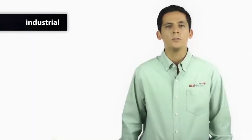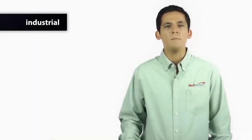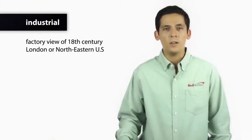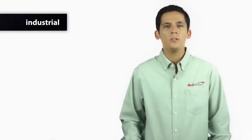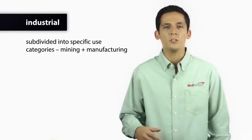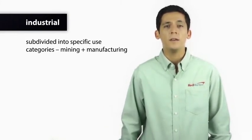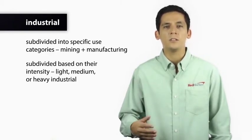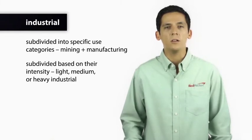Industrial land uses. I like this name because it evokes an image of heavy industry, perhaps a factory view of 18th century London or the northeastern U.S. These uses are typically subdivided into specific use categories such as mining and manufacturing. In addition, industrial uses can be subdivided based on their intensity such as light, medium, or heavy industrial.